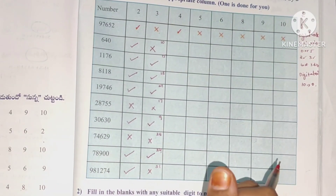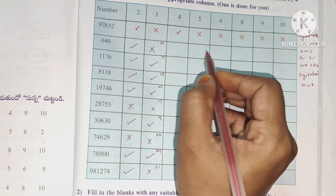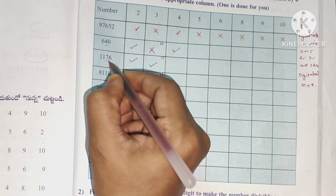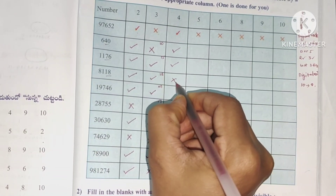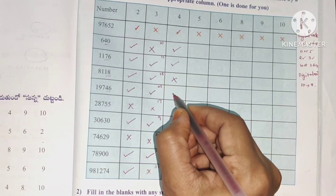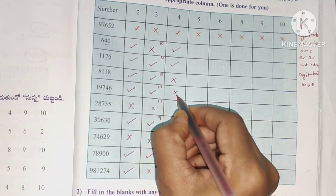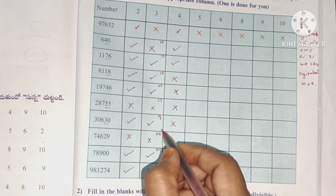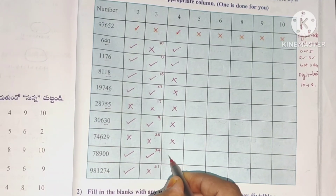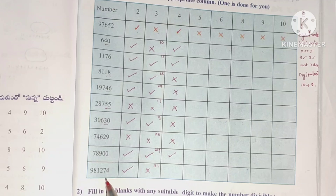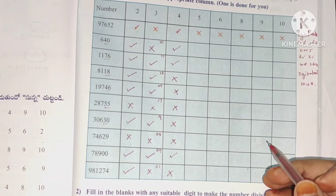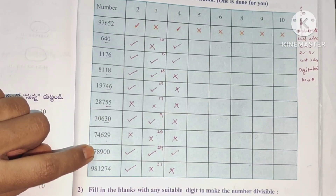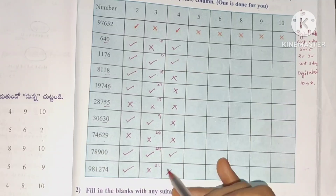For divisibility by 4, check the last 2 digits. Last 2 digits 40 — 4 times 10 is 40, so yes, divisible by 4. 76 — yes, it is divisible. 18 is not divisible by 4. 46 also not divisible by 4. 55 not divisible by 4. 30 not divisible by 4. 29 not divisible by 4. Double zeros — yes, divisible by 4. 74 is not divisible by 4. Only 640, 1176, and 7,78,900 are divisible by 4.